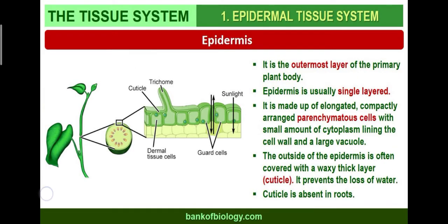Now, the epidermis. It is the outermost layer of the primary plant body. It is single-layered, made up of elongated, compactly arranged parenchymatous cells with a small amount of cytoplasm lining the cell walls and large vacuoles. The outside of the epidermis is covered by a waxy thick layer called the cuticle, which prevents water loss. The cuticle is absent in the root.